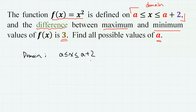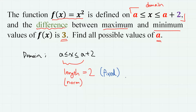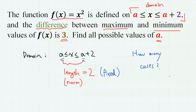The function is defined on a limited domain and the length of the domain is 2, which is a fixed value. As a changes, the domain changes, hence the positions of the maximum and minimum values also change. So the question is: how many different cases are there to deal with?